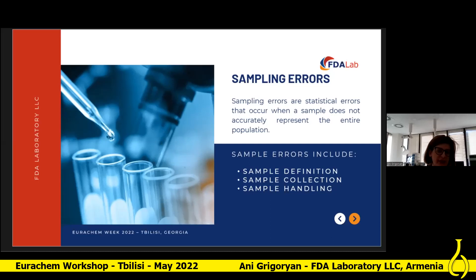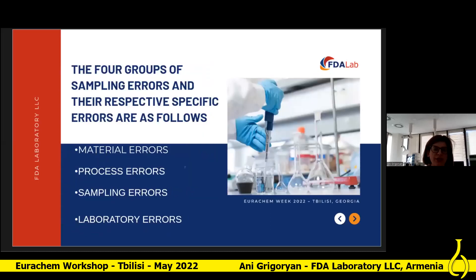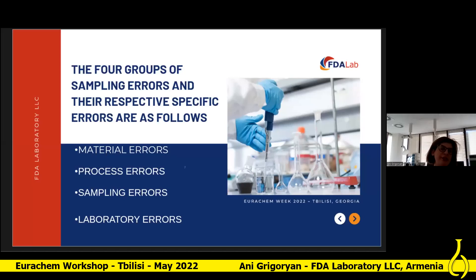Sampling errors include sample definition, sample collection, and sample handling. The ten sampling errors have been categorized into four major groups. The first group is material errors, which includes the fundamental error — generated by composition heterogeneity — and the grouping and segregation error — generated by distribution heterogeneity — and the nugget effect. The second group is process errors, which include periodical and non-periodical variation. The third group is sampling errors, which includes sample definition, sample collection, and sample handling errors. Finally, the fourth group is laboratory errors, which includes analytical errors and data errors.